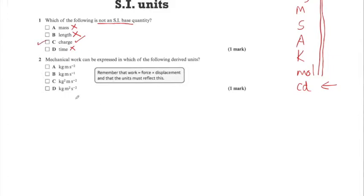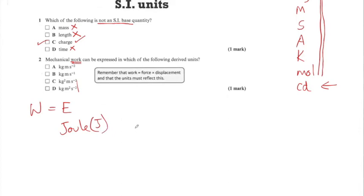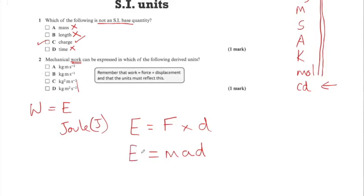Work is force times distance. You need to show that work can be expressed in base units. Work is basically the same as energy. The way we work out energy is: energy equals force multiplied by distance. Force is MA, so I can replace F with MA and end up with MAD. So energy or work is given by MAD.